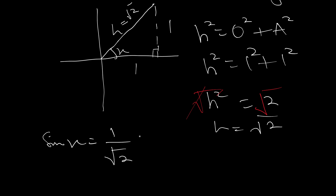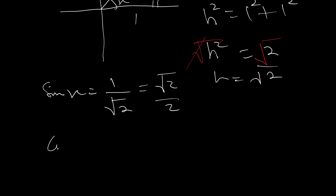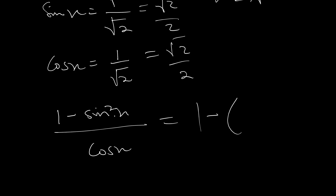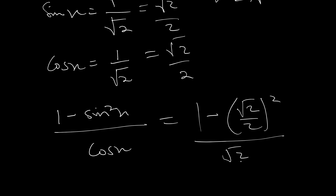So 1 over the square root of 2 is the same as root 2 over 2. Also, cos x equals adjacent over hypotenuse, which is 1 over root 2, and this is also root 2 over 2. We are evaluating 1 minus sine squared x all over cos x. This can be written as 1 minus (root 2 over 2) squared, all divided by root 2 over 2.